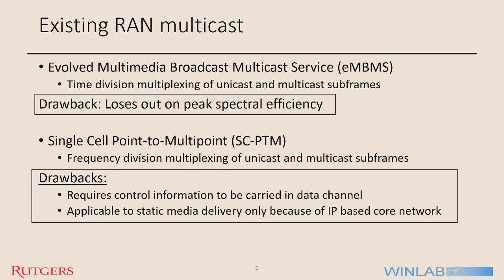Regarding the existing cellular RAN multicast, there are two deployment technologies. One is Evolved Multimedia Broadcast Multicast Services, called eMBMS, which is time division multiplexing of unicast and multicast subframes — but the drawback is it loses out on peak spectral efficiency. The second is Single Cell Point to Multipoint, which covers this drawback by frequency division multiplexing of unicast and multicast subframes, but it still lacks because it requires control information to be carried in the data channel, becomes less spectrally efficient, and is applicable only to static media delivery — not suitable for full-mode or on-demand multicast.